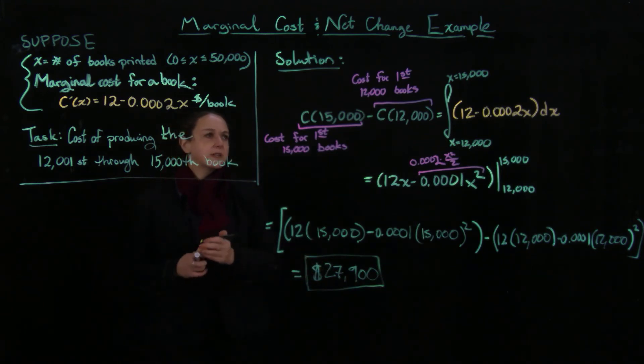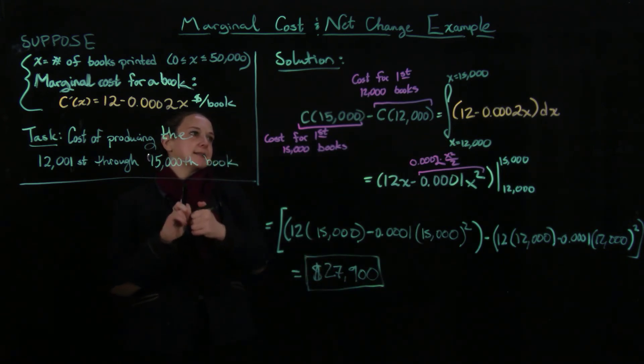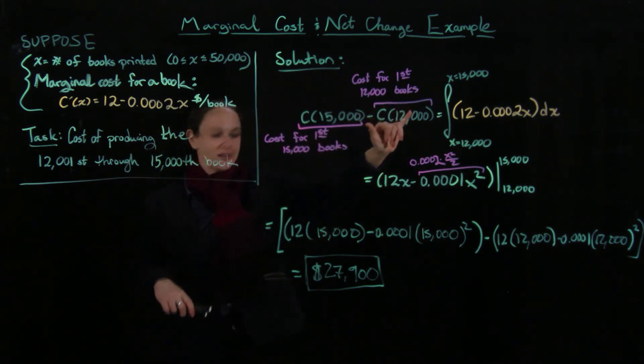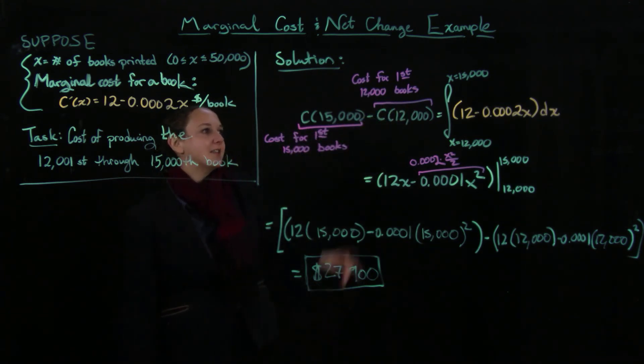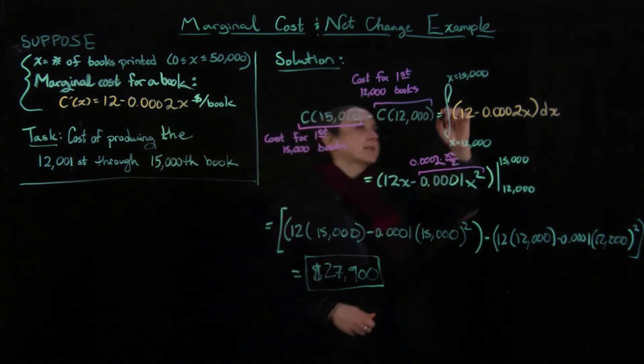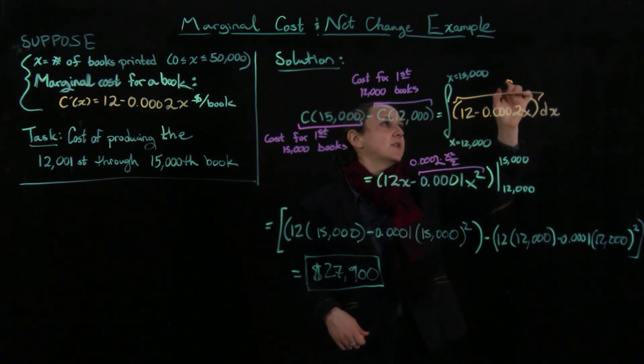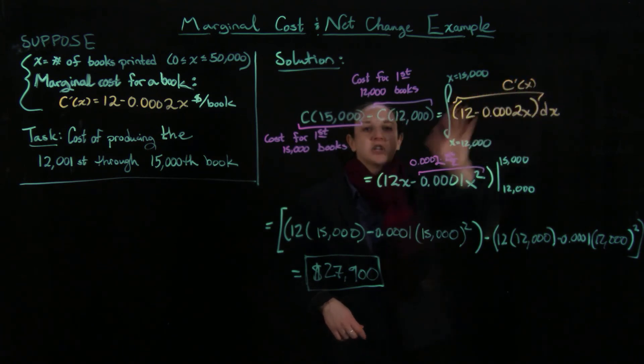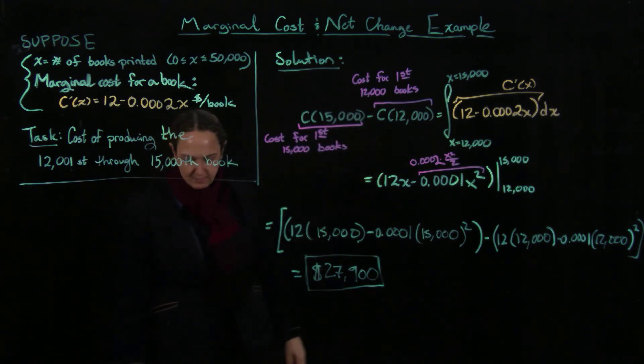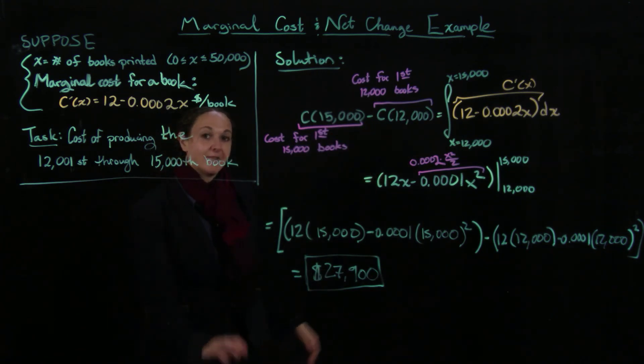So the only really tricky part here is realizing that I'm taking the cost of the first 15,000 books and subtracting off the cost of the first 12,000 books. And then this is exactly right because this here is just c prime of x. This is exactly as we know these things work by the net change theorem. And then you're just integrating a polynomial, so there's nothing tricky there.